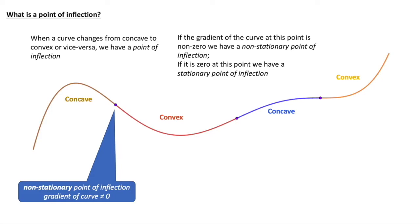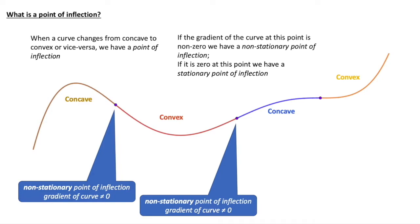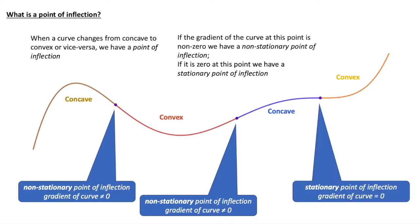Moving along the red part of the curve to where the concavity changes again — is that stationary or non-stationary? The curve itself has a non-zero gradient, so it must be a non-stationary point of inflection. But the final one is a stationary point of inflection because the gradient of the curve there is actually zero.